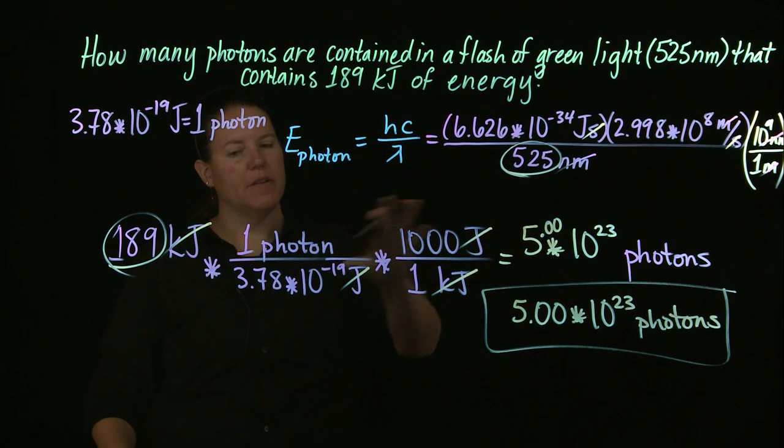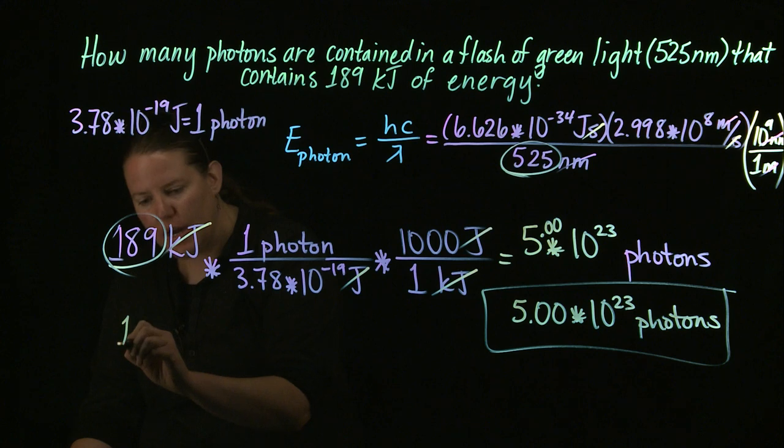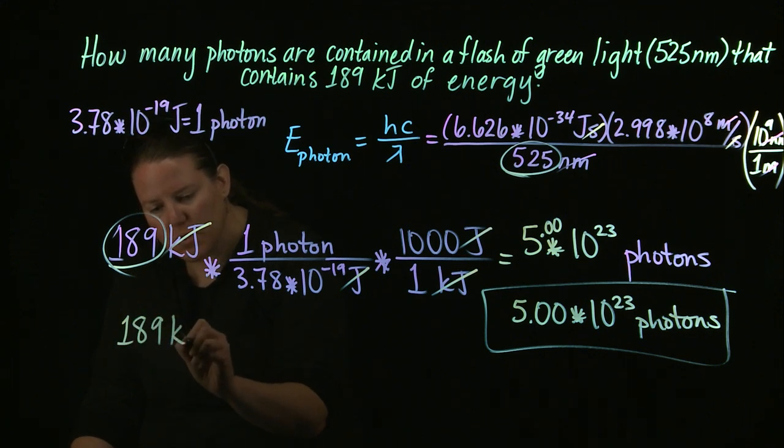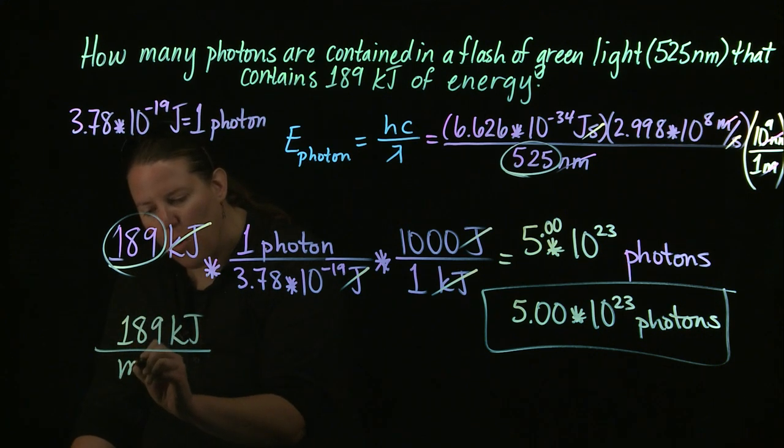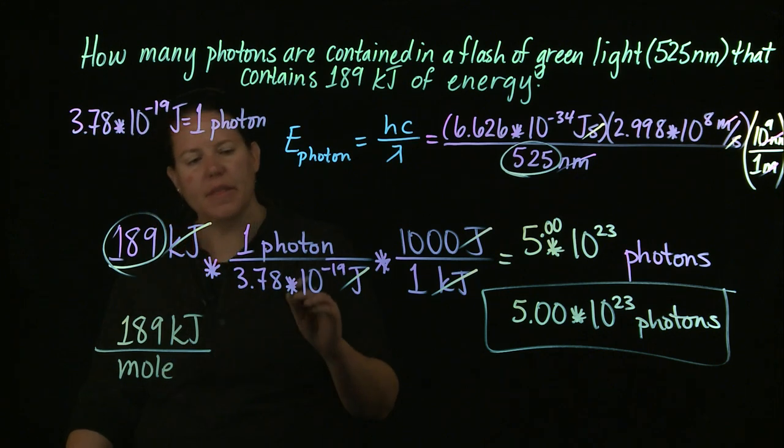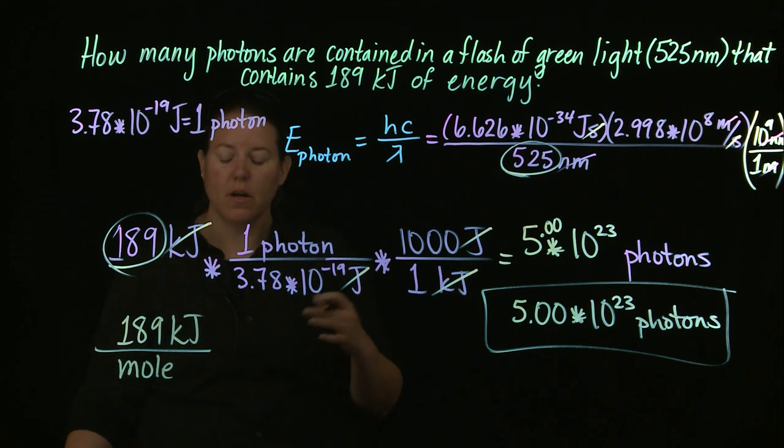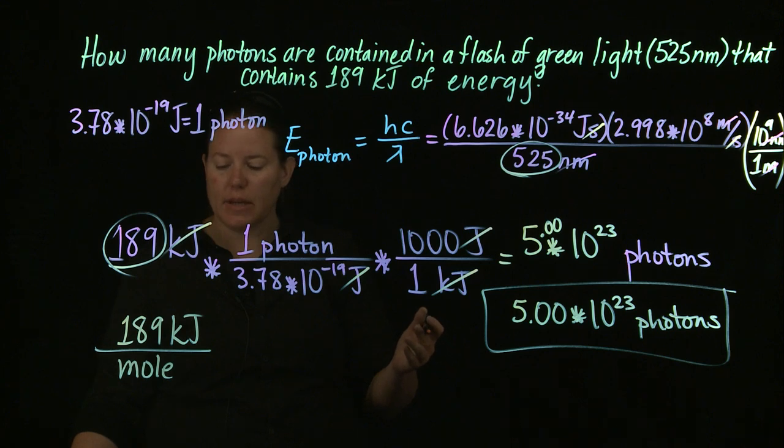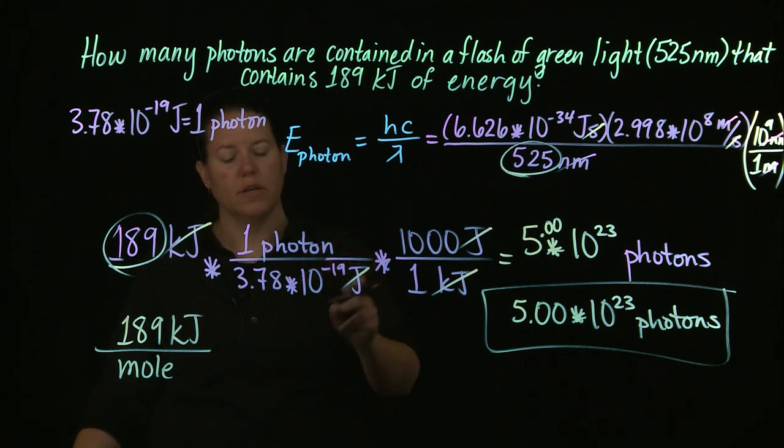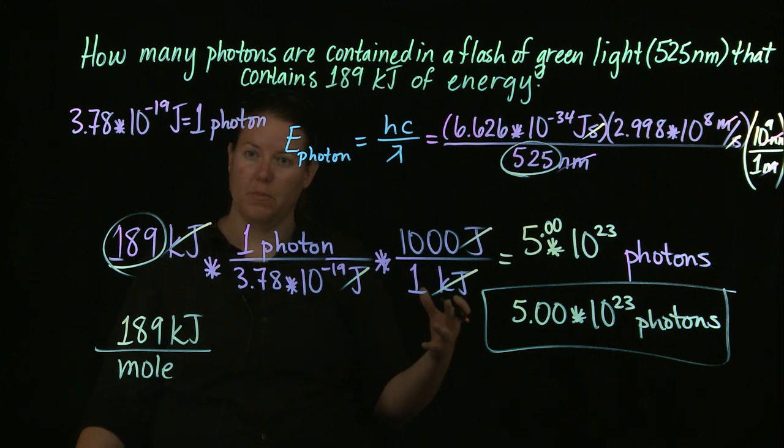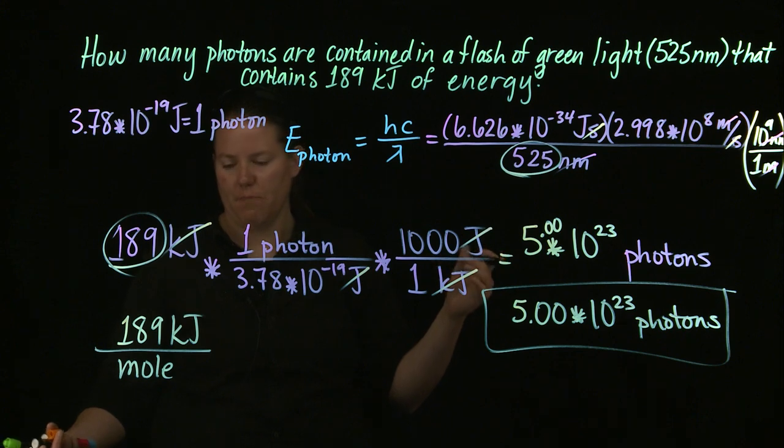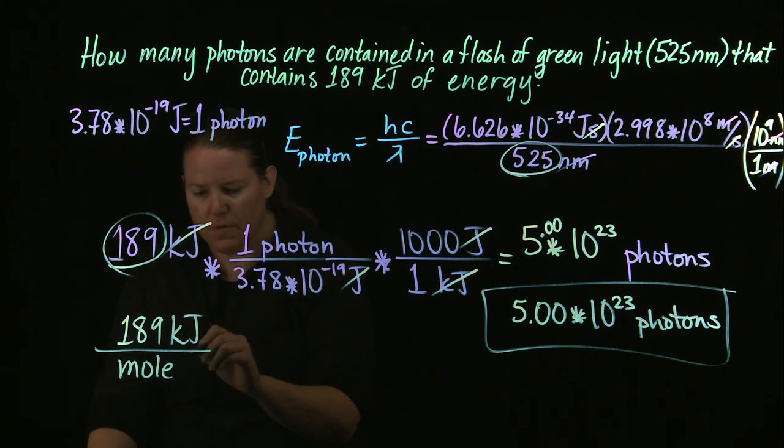If I had been given, for instance, that this was 189 kilojoules per mole, then this would have been a different problem. Same kind of deal, but a different problem indeed. And the reason why is because you can still calculate the number of photons and the energy here. It just becomes a little bit different. You're finding something different.